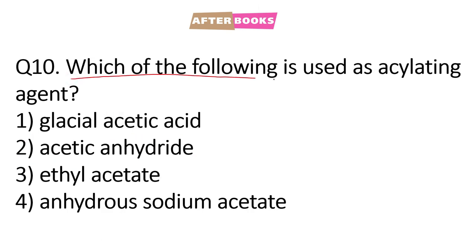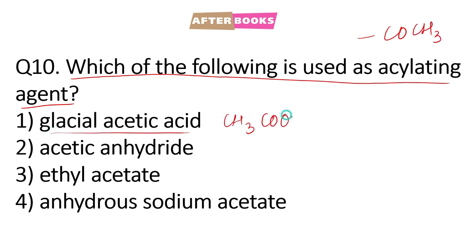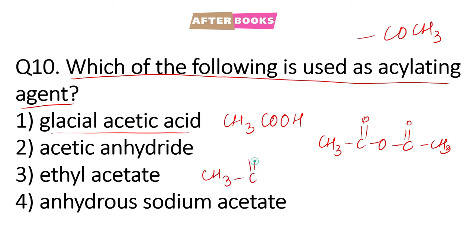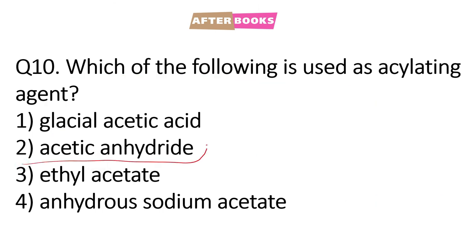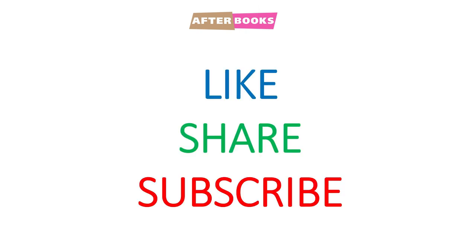Question number 10: which of the following is used as an acylating agent — acylating agent which can introduce COCH3 group. Glacial acetic acid is CH3COOH, acetic anhydride is CH3CO-O-COCH3, ethyl acetate is CH3COOC2H5, and anhydrous sodium acetate is CH3COO⁻. Jo anhydrides hote hain jis mein —CO-O-CO— group hota hai, these are very good acylating agents. So the correct answer to this question is option number 2. So this is it for this video; in the next video we will discuss next MCQs related to aldehydes, ketones, and carboxylic acids.